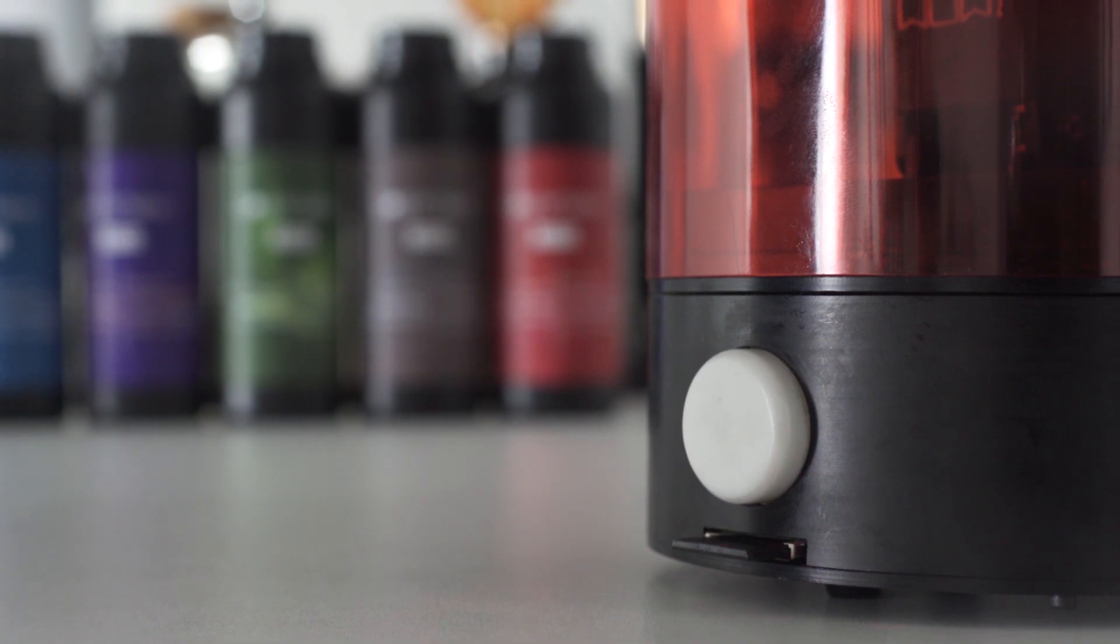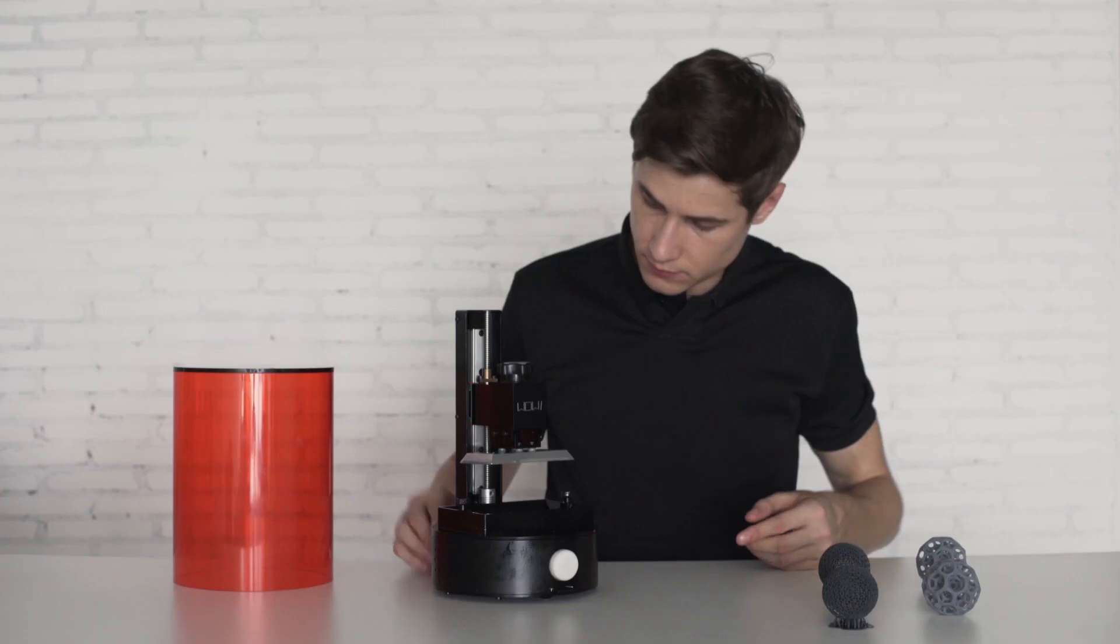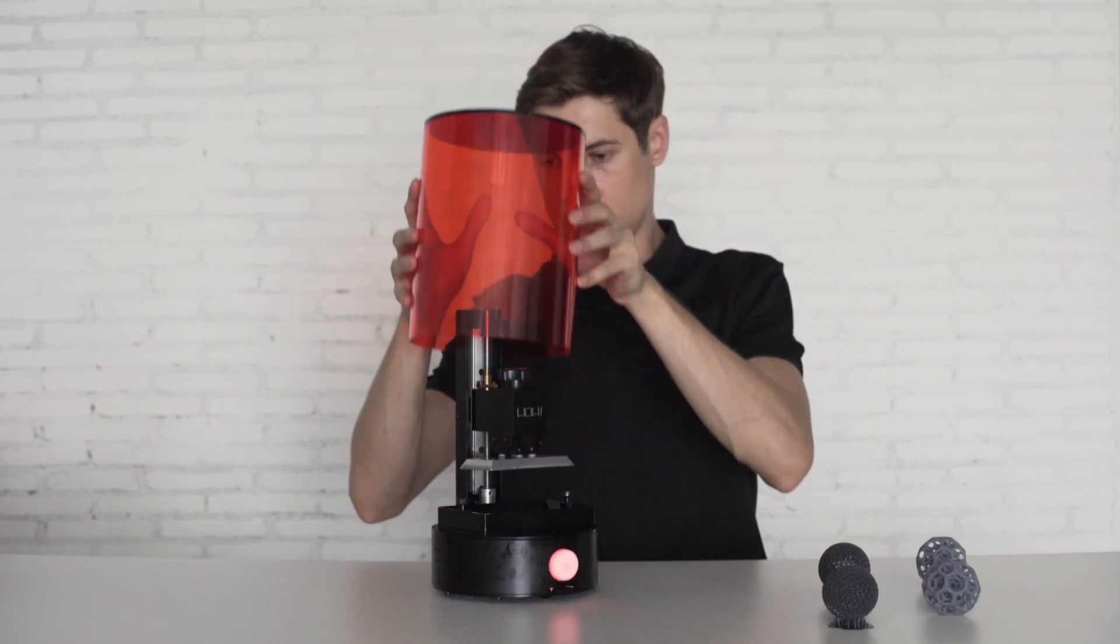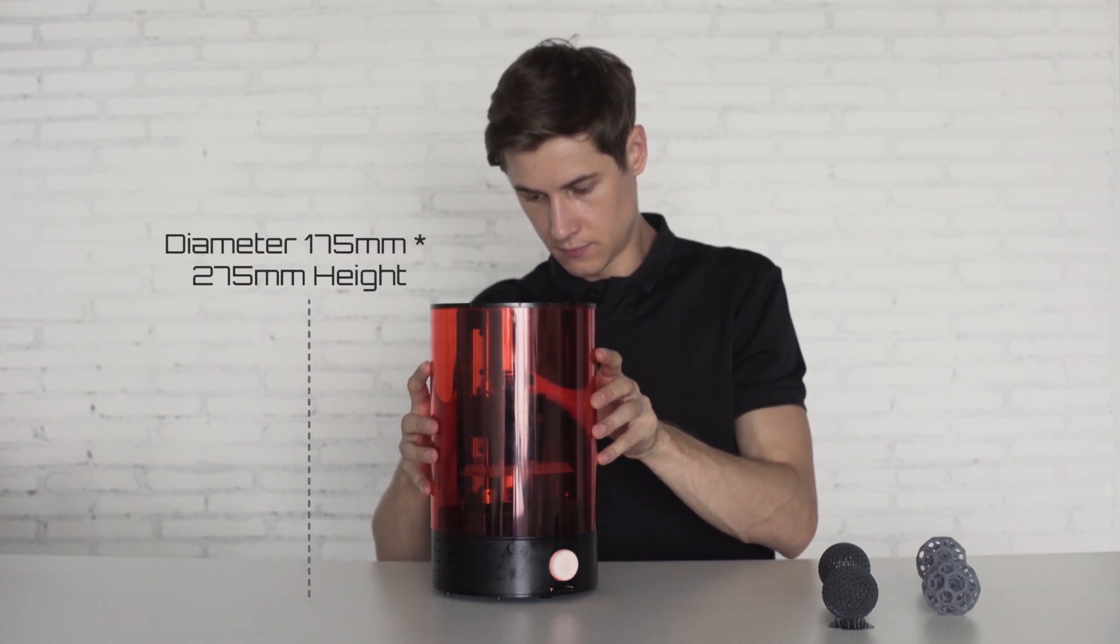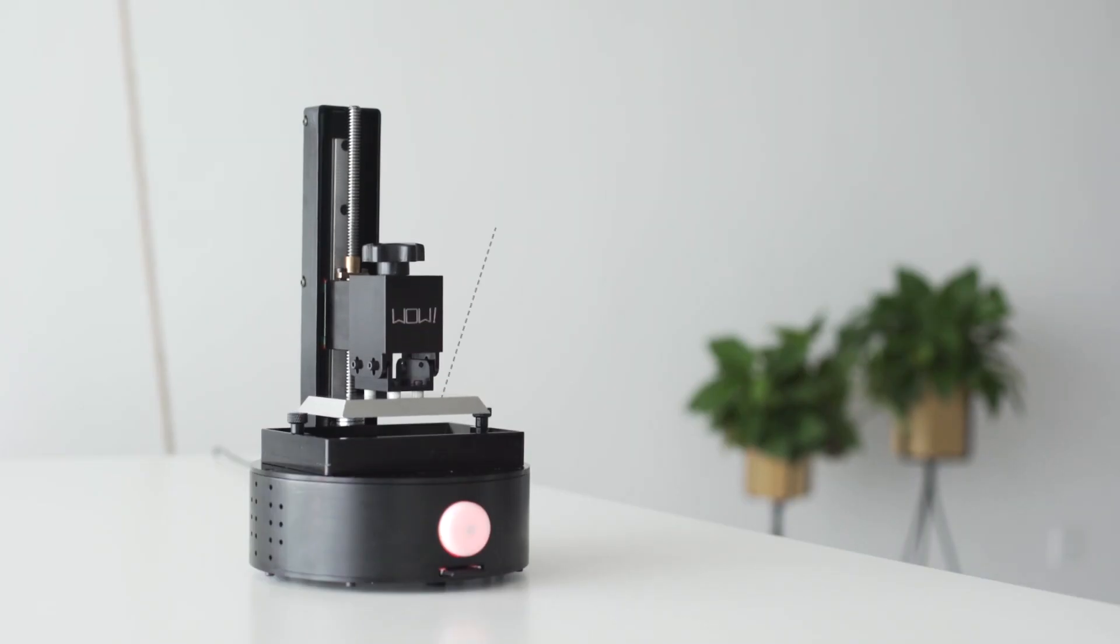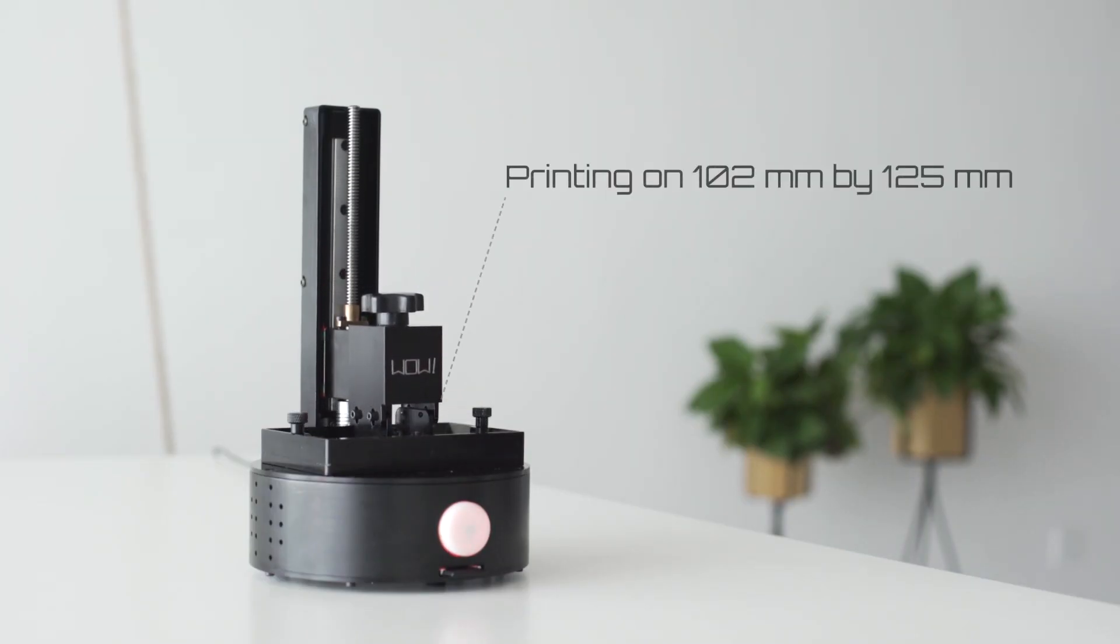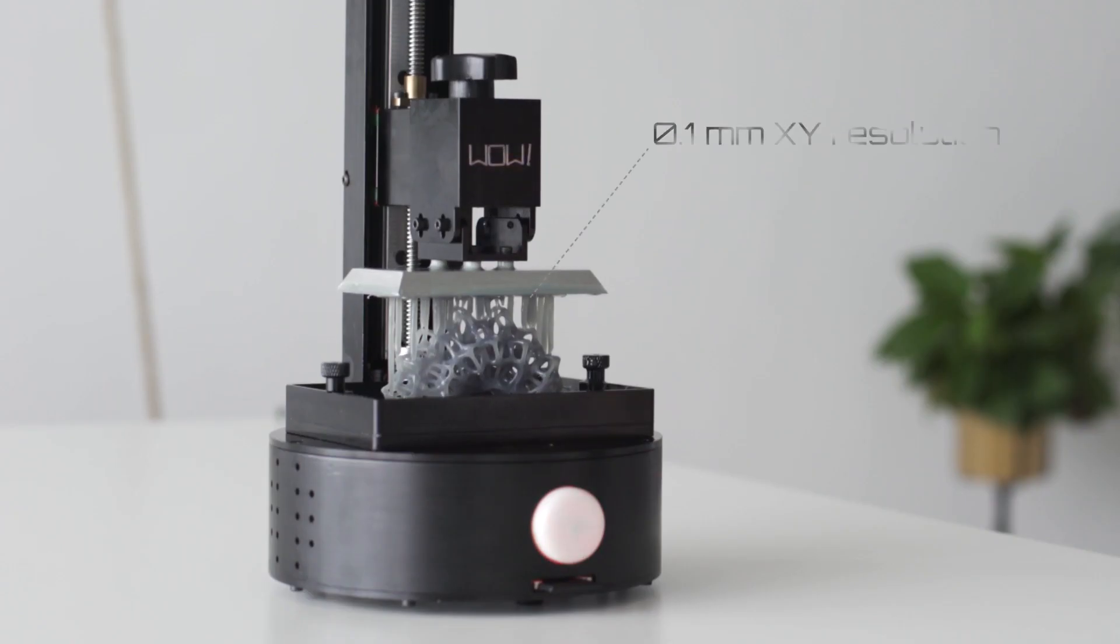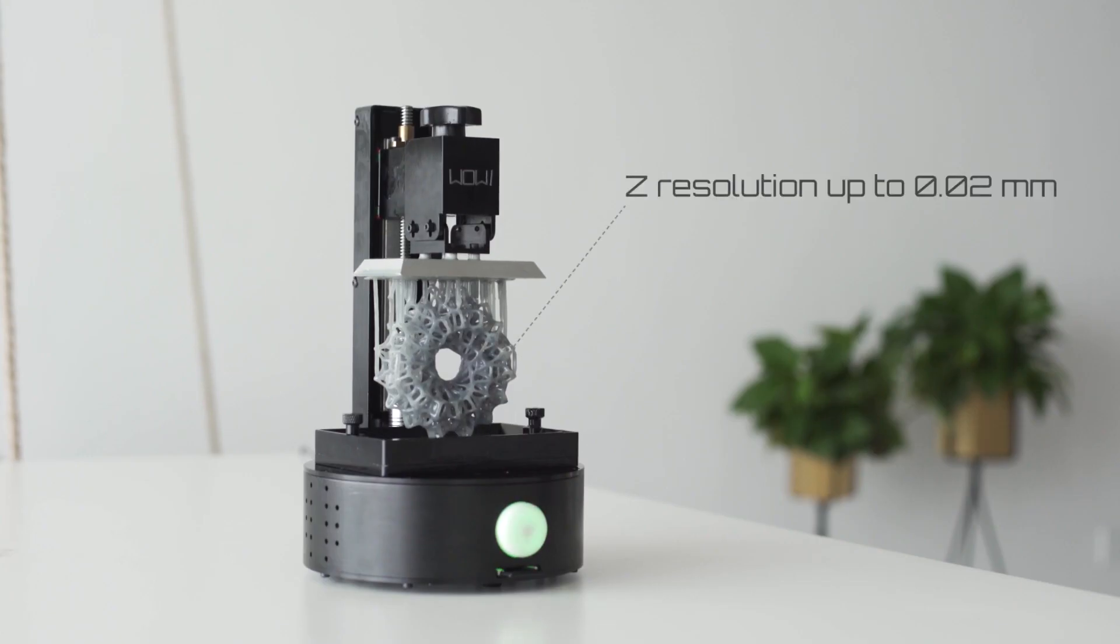During printing, an LED light keeps you updated about the status and a UV protective translucent cover avoids any damage from the environment. The printing area is 102 by 125 millimeters with a 0.1 millimeter XY resolution and a Z resolution up to 0.02 millimeters.